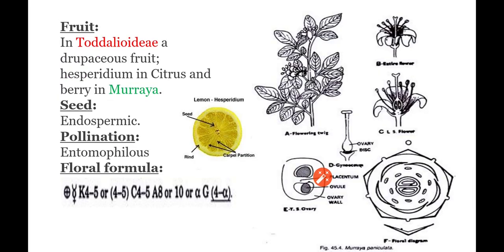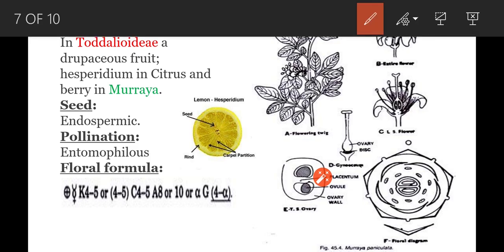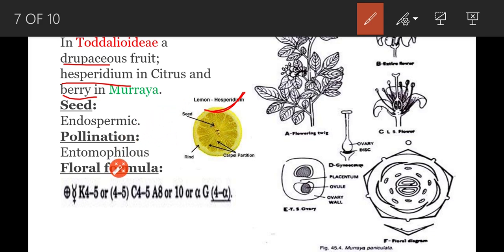Coming to fruit: in Toddalia, fruit is drupaceous — that means a drupe. In Citrus, fruit is hesperidium. In Murraya, fruit is berry. Coming to seed: seed is generally endospermic — endosperm is present in the seed. Pollination takes place with the help of insects, so it is called entomophilous.